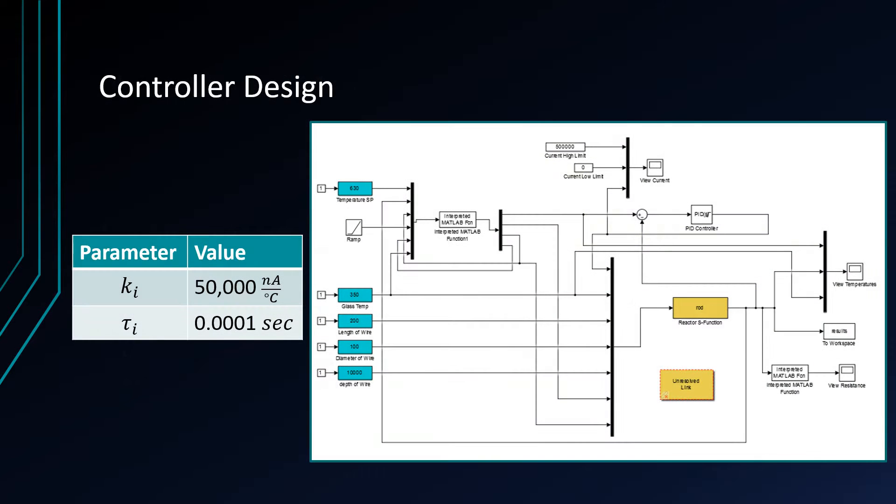We're on the nanoscale for the cooling and heating. Because of that, our tuning parameters for our PI controller are on a fairly large magnitude. For the KI parameter, we have 50,000 nanoamps per degree Celsius, and for the tau I parameter, we have 0.0001 seconds. Because of the nonlinear nature, we developed an S-function in MATLAB to convert the current into a temperature and control that. We have the set point here and also the ramp, because after the 10 nanoseconds of heating, it then has to start cooling at a certain rate. That ramp automatically sets as soon as we reach the set point to begin that cooling process at the desired rate.